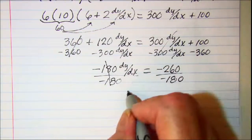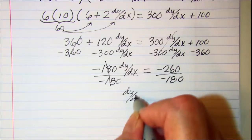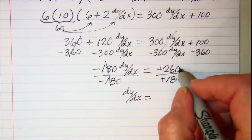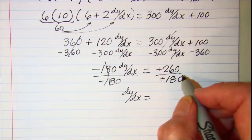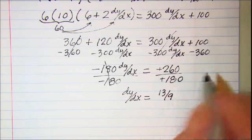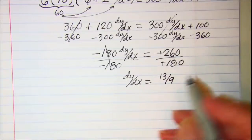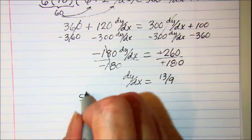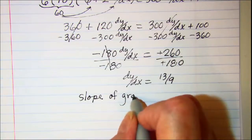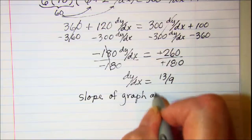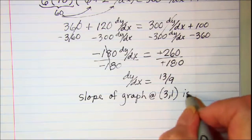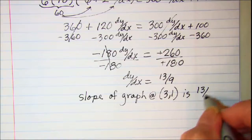And so cancel and dy dx is equal to positive 13 over 9. So the slope of my graph at the point 3, 1 is 13 ninths.